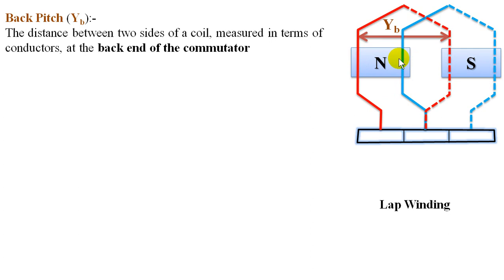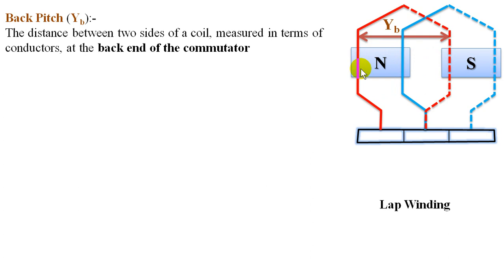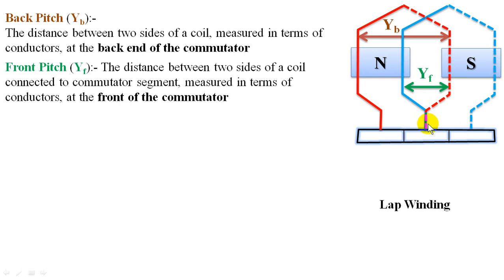The distance between the coil sides of a coil is also called YB. Now let us see what is YF. YF is defined as the distance between two sides of a coil connected to a commutator segment, measured in terms of conductors at the front end of the commutator. This distance is called YF. You can also redefine this as the distance between two different coils — specifically the distance between the end of one coil side and the start of a successive coil under the same commutator.